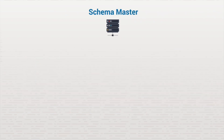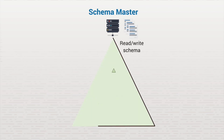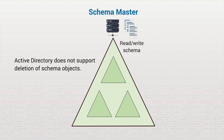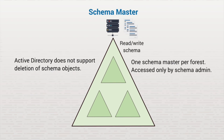The Schema Master domain controller has the only read-write copy of the schema in the forest. The schema is the template for Active Directory, so any changes made to the template affect all existing and future Active Directory objects. For example, fields added to user accounts cannot be removed. Because of this far-reaching impact and the difficulty in correcting mistakes, it is best to have only one schema in the forest. Only schema admins can access it.